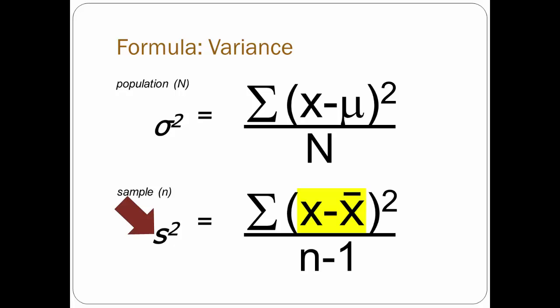x refers to the individual score, so this formula is telling you that you take each score in the data set and subtract the mean from it. Go next to the exponent, which says that you square what you've got — so x minus x-bar, squared. This interim statistic is called deviation. You do this for each score in the data set. That means that if you have 10 scores, you will do 10 calculations: the first score minus the mean, squared, then the second score minus the mean, squared, etc. You are calculating squared deviation.